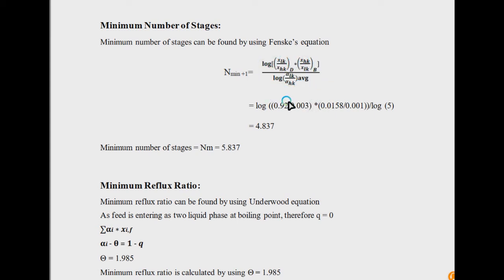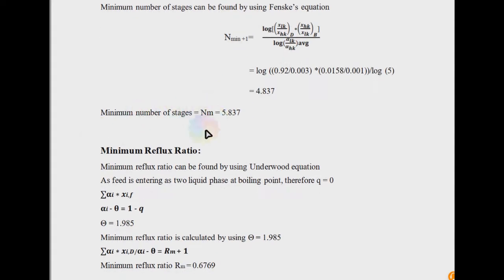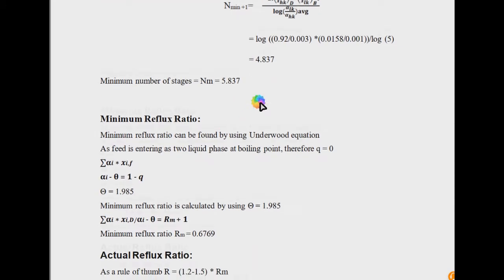The average is most commonly based on the average of alpha at the bottom and alpha at the top — alpha of the light key and heavy key at top and bottom — and their ratio is averaged. Using this formula, you can calculate the minimum number of stages. Note that it is plus one in the formula, so it will be subtracted on the right side of the equation. The minimum number of stages here comes out to be 5.837.